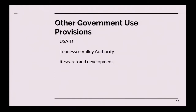There are some other government use provisions that have been proposed and that exist in U.S. law, including for USAID in 1961, the Tennessee Valley Authority in 1933, and some of the other R&D statutes allow for government use.